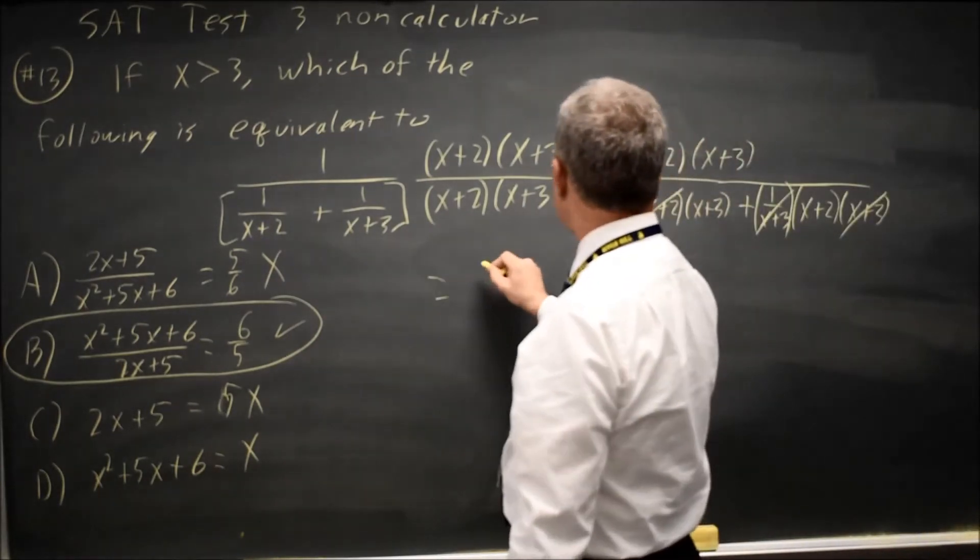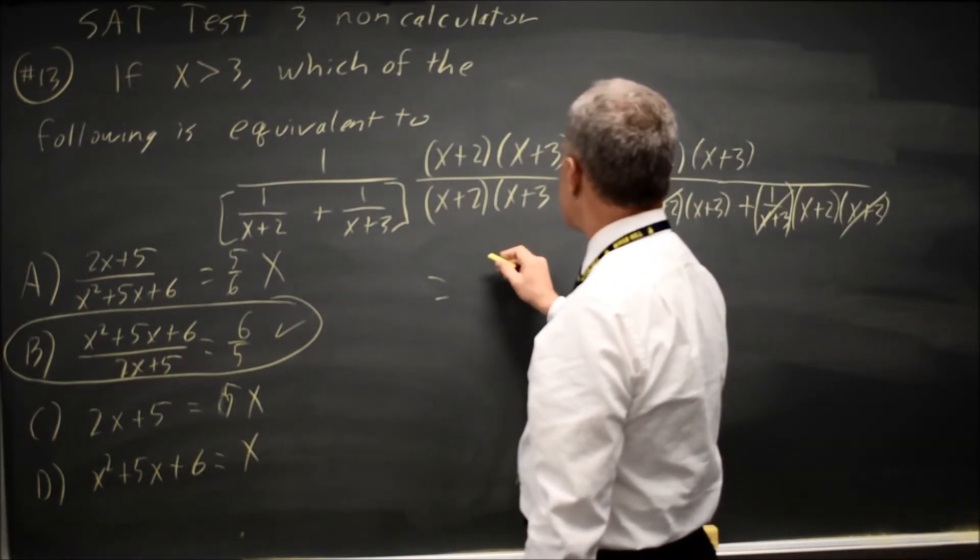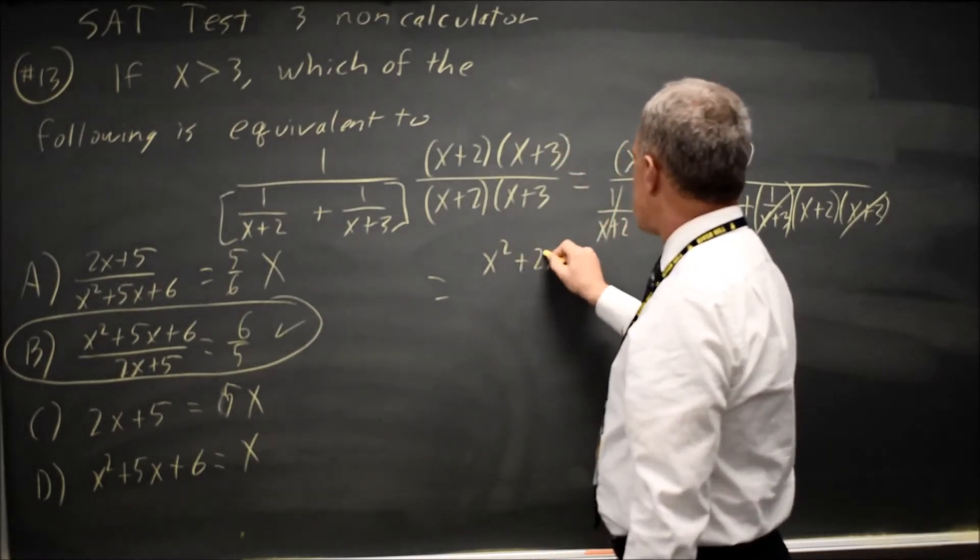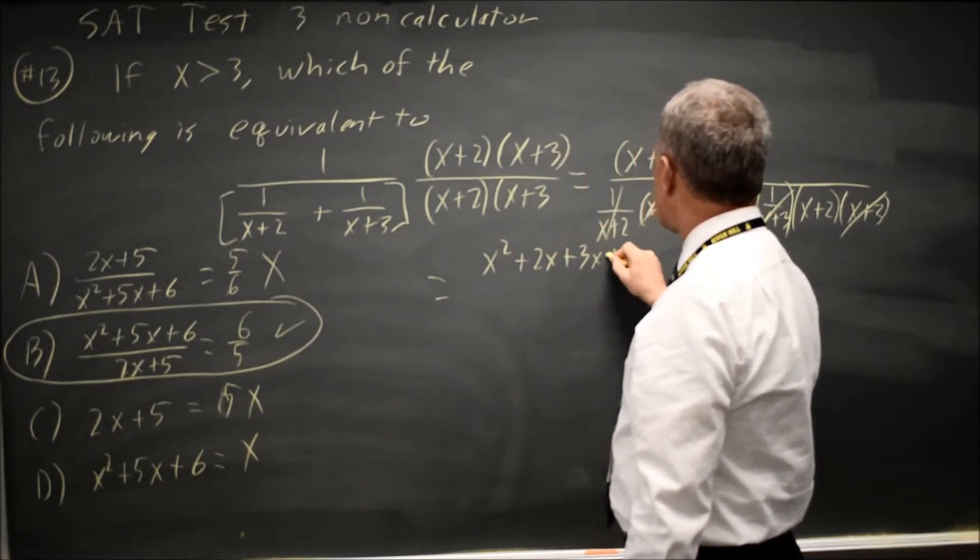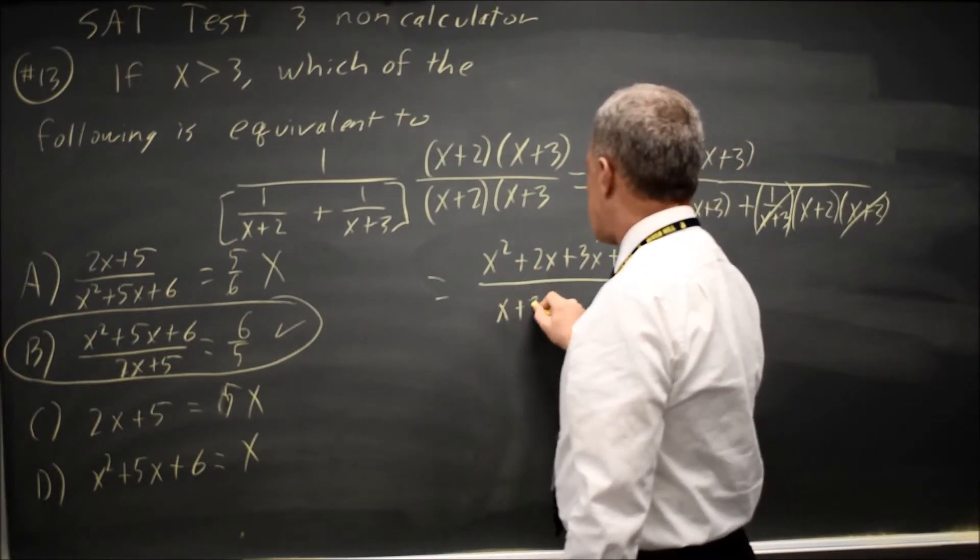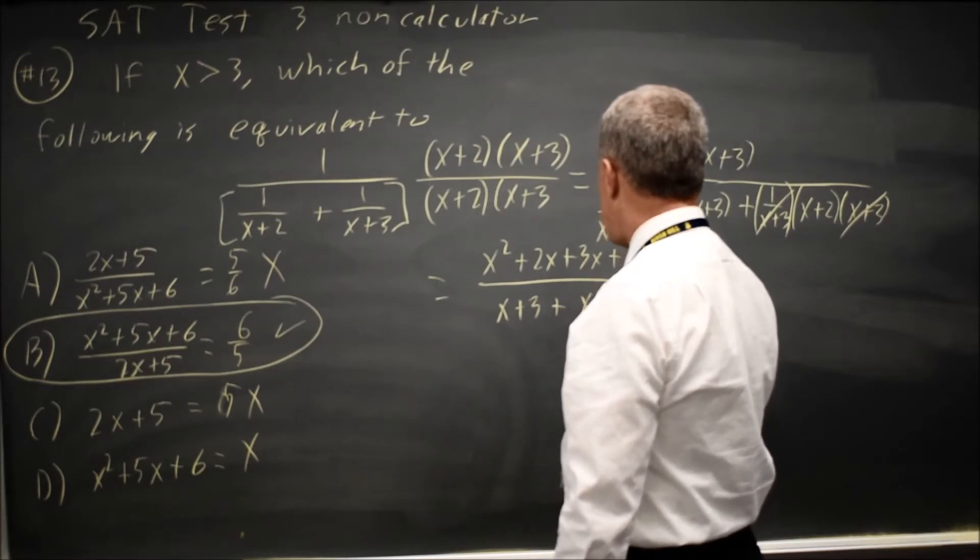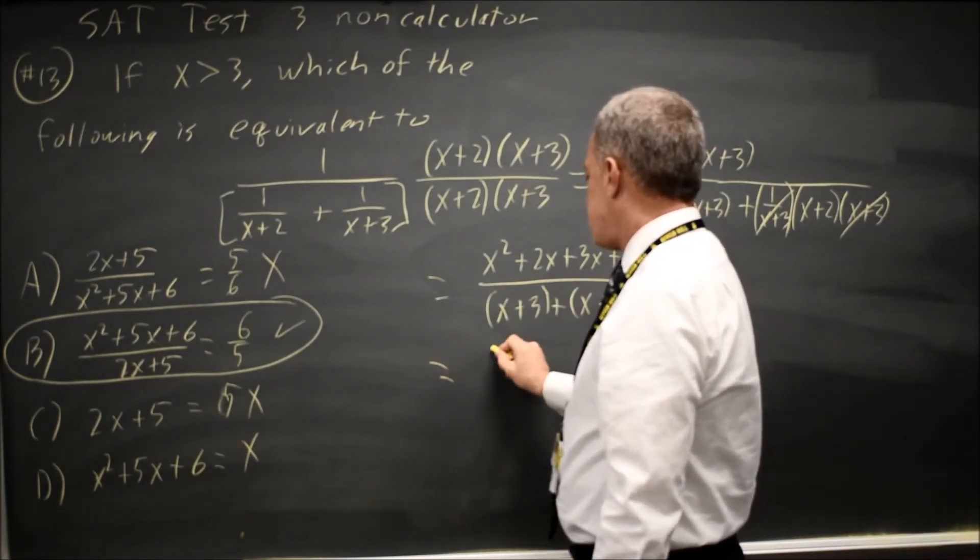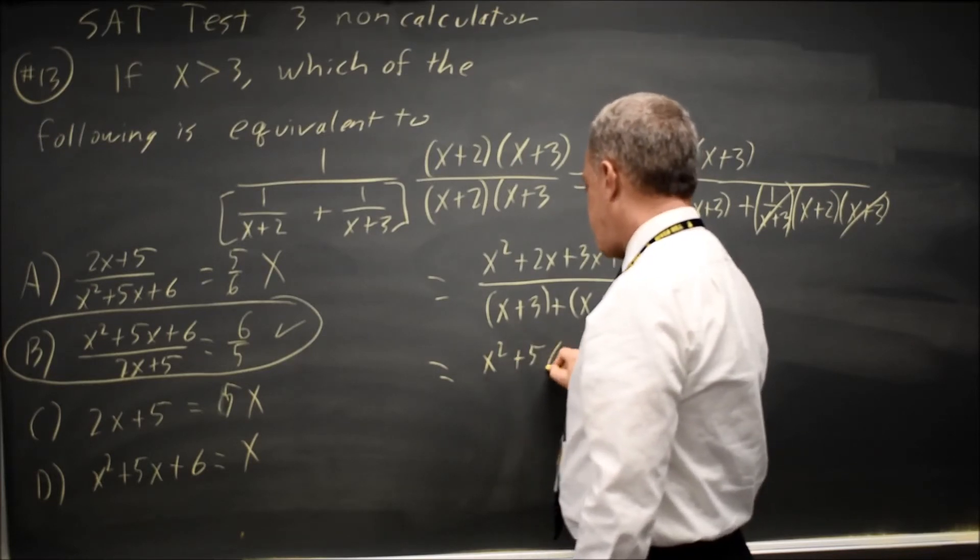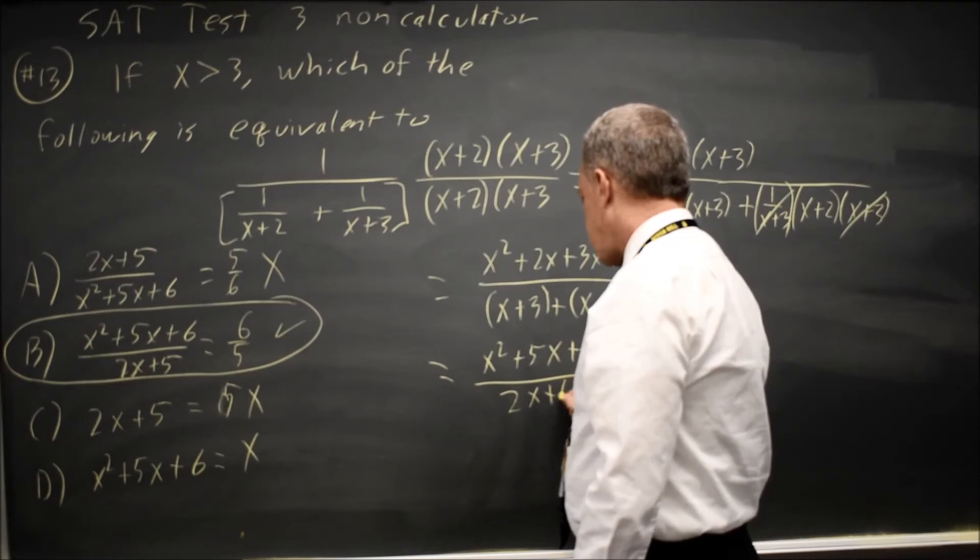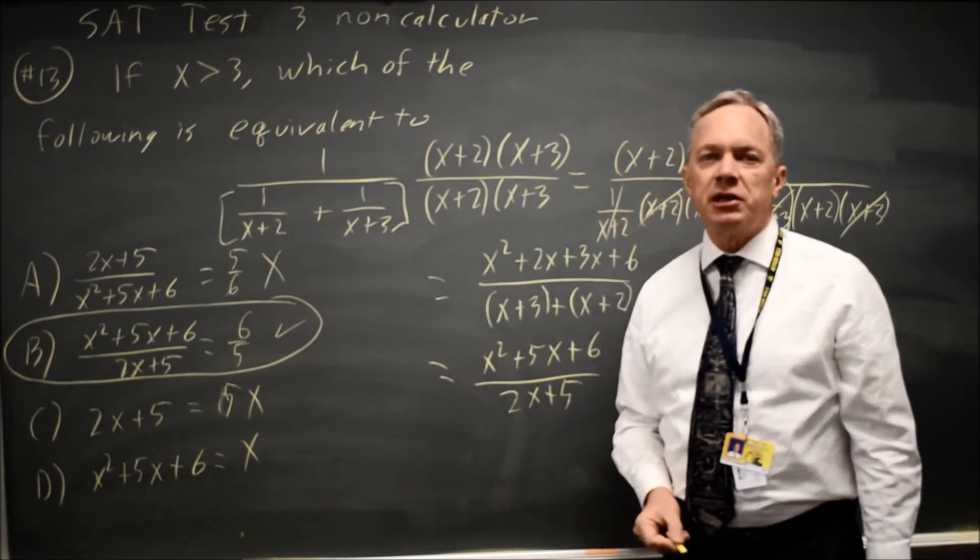So that leaves a numerator of x plus 2, x plus 3, which will give you x squared plus 2x plus 3x plus 6, over x plus 3 plus x plus 2. Simplifying, that's x squared plus 5x plus 6 over 2x plus 5, which is choice B.